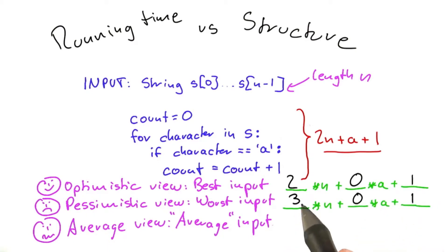Now, the neat thing about this here is that in both cases, both with a best-case view and with a worst-case view, we have eliminated the dependency on a. So we know that no matter what string the algorithm receives, the running time will always be between 2n plus 1 and 3n plus 1.